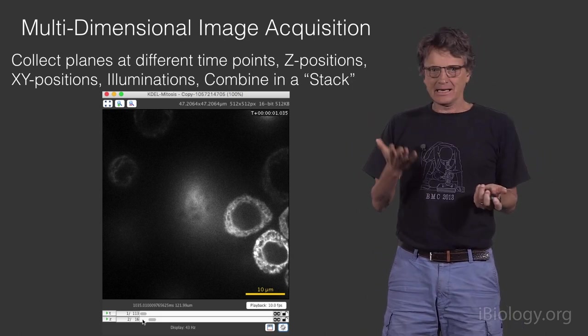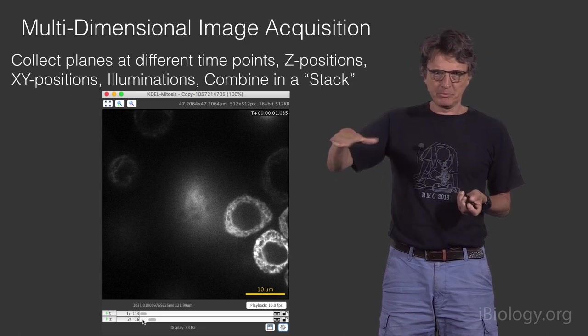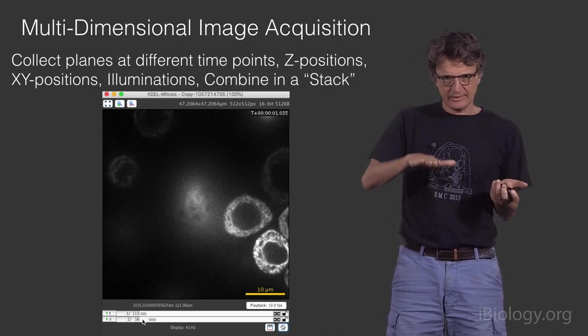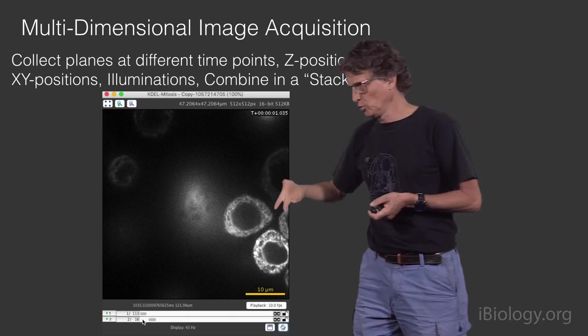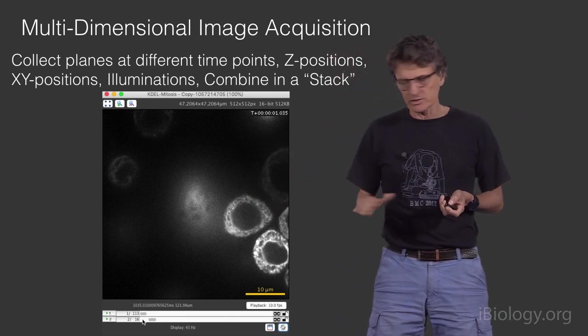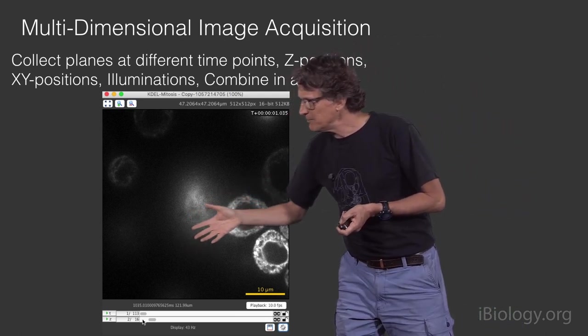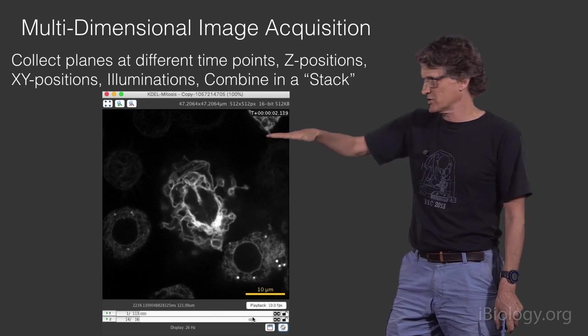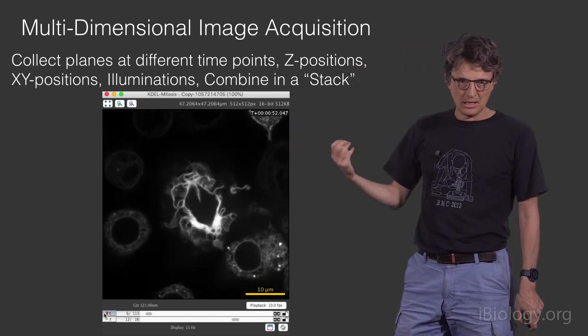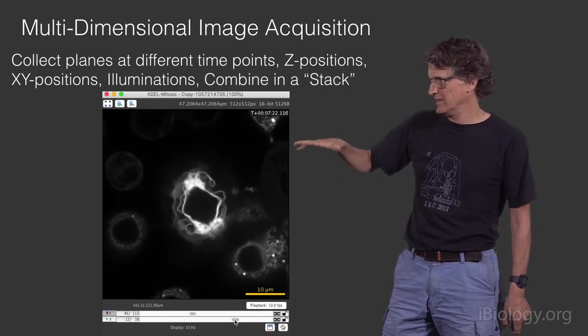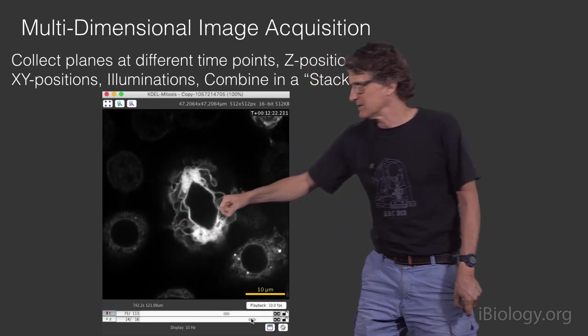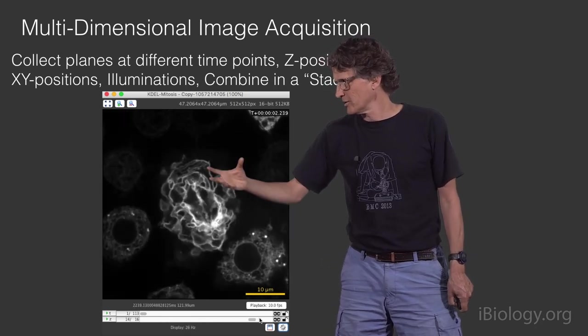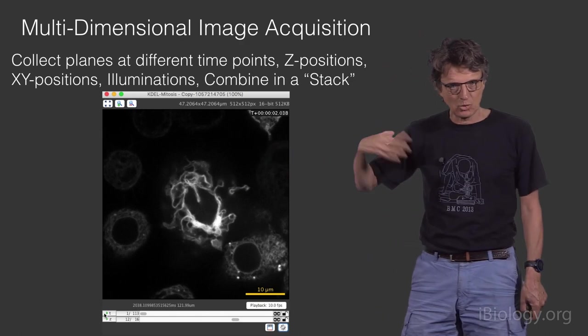When you're acquiring things like multiple Z positions, multiple XY positions, or time-lapses, the way that is often represented in computer memory is that these are stacks of images, and you will have some kind of tool, a viewer, that lets you go through those. Here, I have a time-lapse image taken at different Z positions. When we now scroll through Z, you see that with changing the focal position, we get an idea about the three-dimensional organization. Then we can play a time-lapse image of this. This is actually a Drosophila S2 cell with an ER label in mitosis, and you saw in the time-lapse how that behaves.